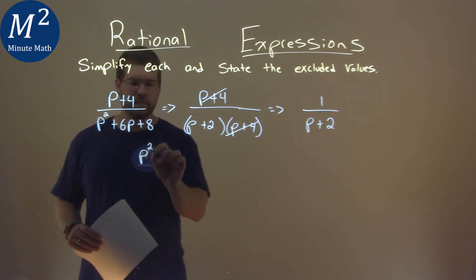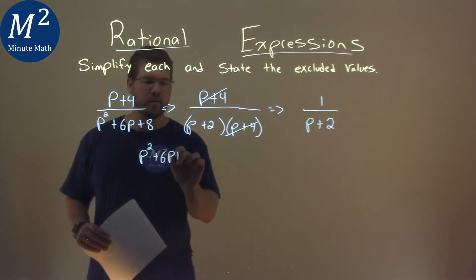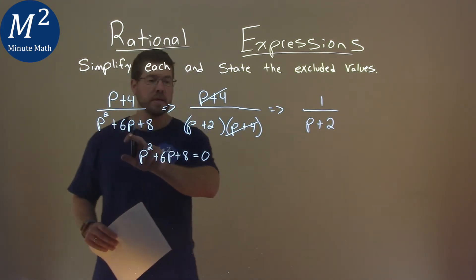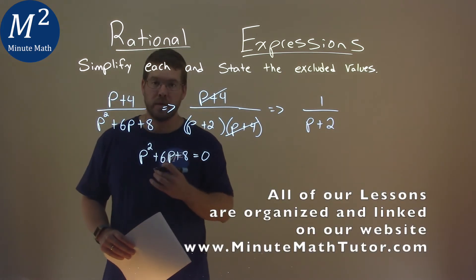So we take our denominator, the p squared plus 6p plus 8, and we're going to set it equal to 0 from the original to find which values for p cause our denominator to be equal to 0.